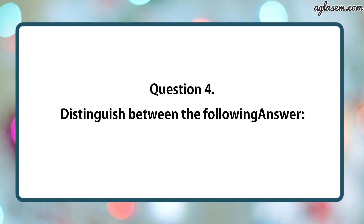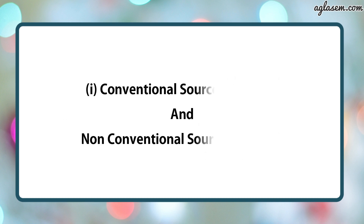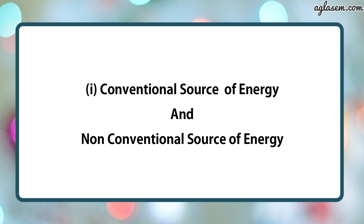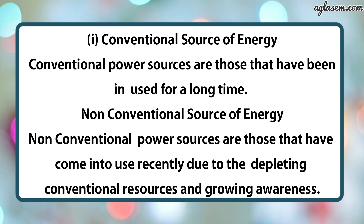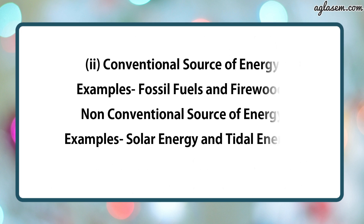Question number 4 says: distinguish between the following. Part 1: conventional source of energy and non-conventional source of energy. Conventional power sources are those that have been in use for a long time, whereas non-conventional power sources have come into use recently due to depleting conventional resources and growing awareness. Examples of conventional sources are fossil fuels and firewood, whereas examples of non-conventional sources are solar energy and tidal energy.